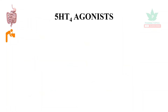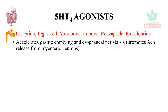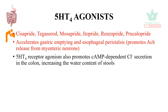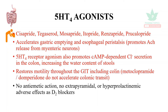5-HT4 agonists include cisapride, tegaserod, mosapride, itopride, renzopride, and prucalopride. They accelerate gastric emptying and esophageal peristalsis, promote acetylcholine release from myenteric neurons, and via 5-HT4 receptor agonism also promote cyclic AMP-dependent chloride secretion in the colon, increasing the water content of stools. They restore motility throughout the GIT including the colon. Unlike metoclopramide and domperidone, they accelerate colonic transit. They have no antiemetic action and no extrapyramidal or hyperprolactinemic effects, unlike D2 blockers.